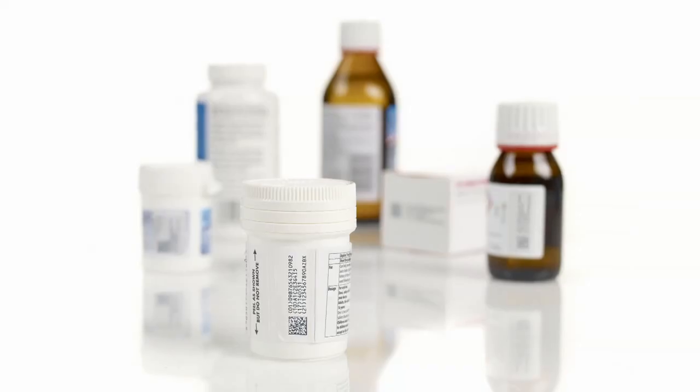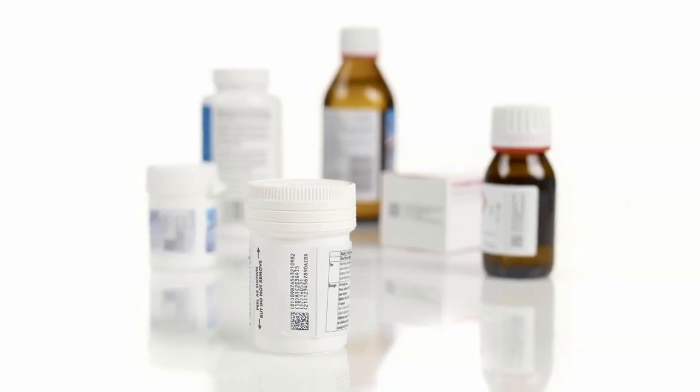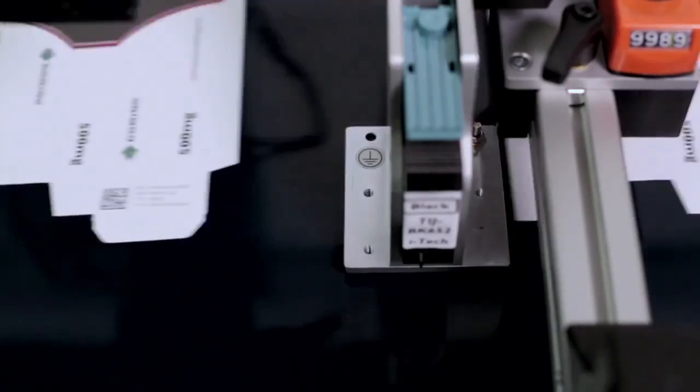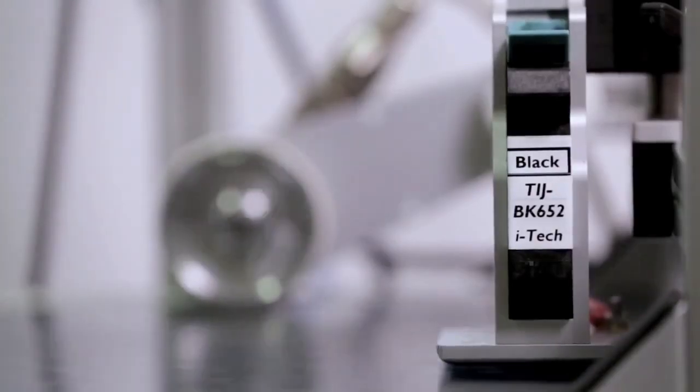If we take the pharma example, pharma legislation is coming through throughout the world, and the requirements include printing 2D data matrix codes or 1D codes at high speeds. Because you'll have a lot of information in those codes, they need to be high resolution and high print quality. We have products that can do that.